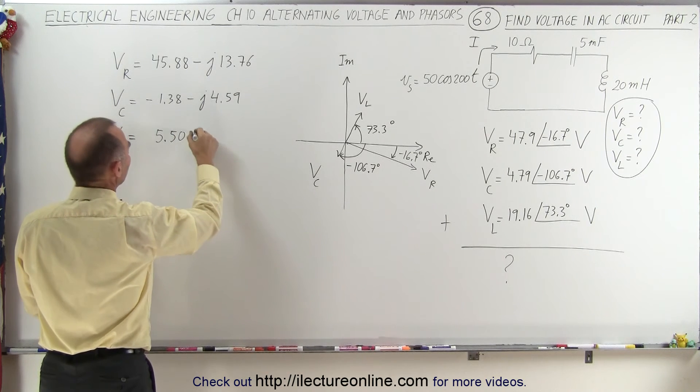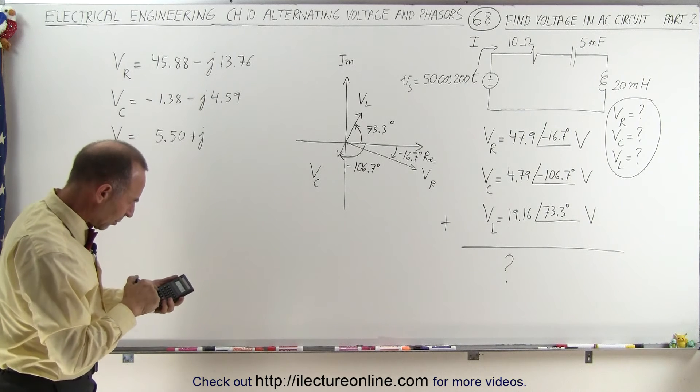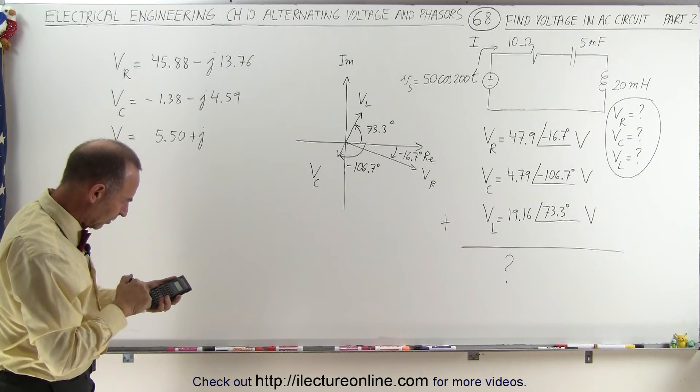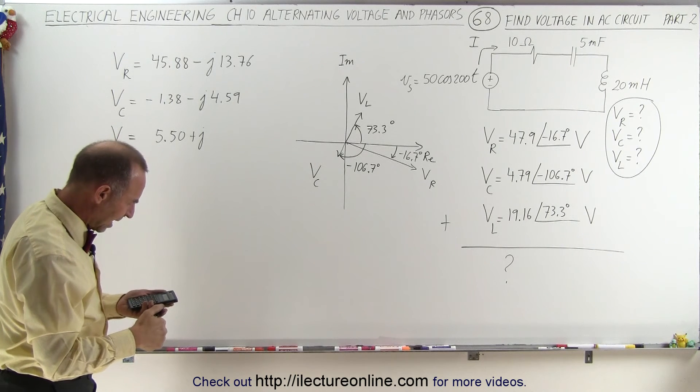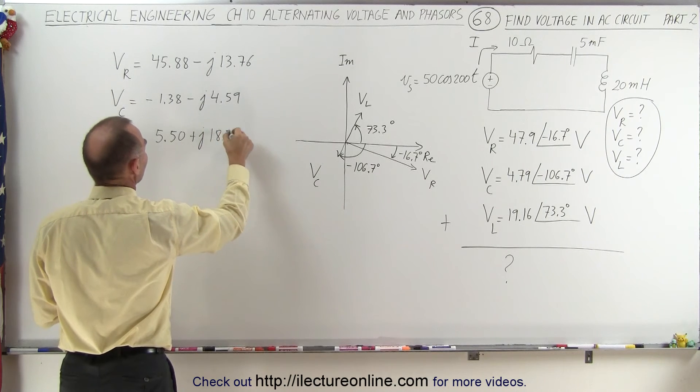And that will be plus j. 73.3, take the sine of that and multiply it times 19.16. And that will be 18.35, and that's positive.